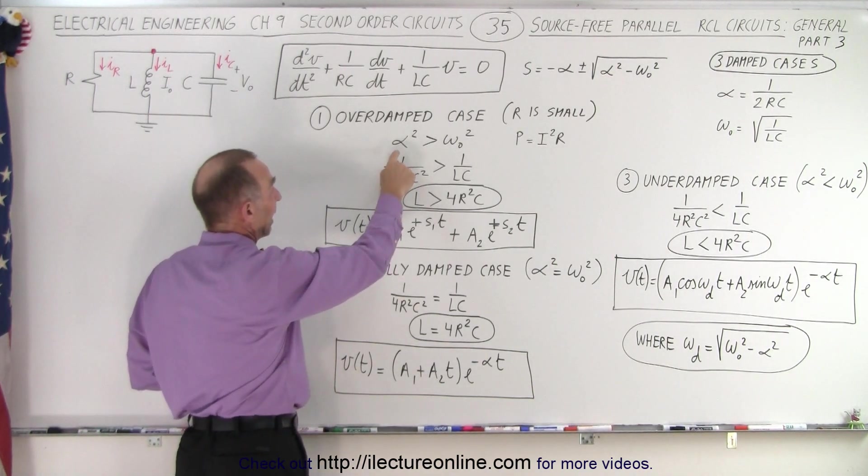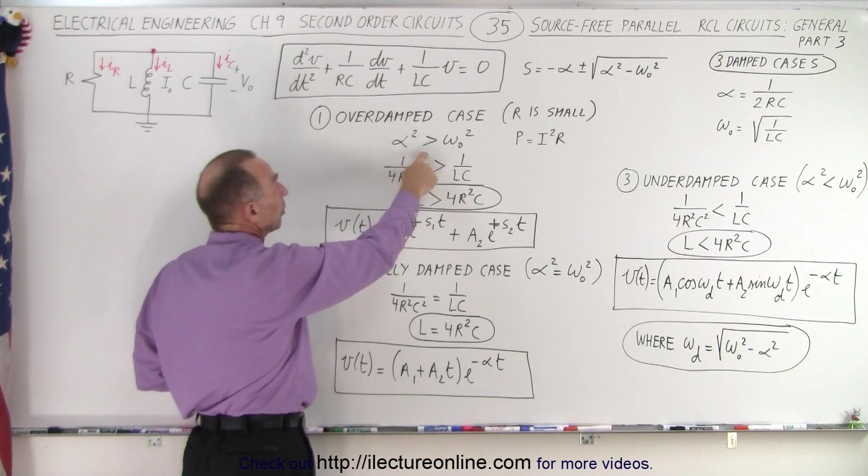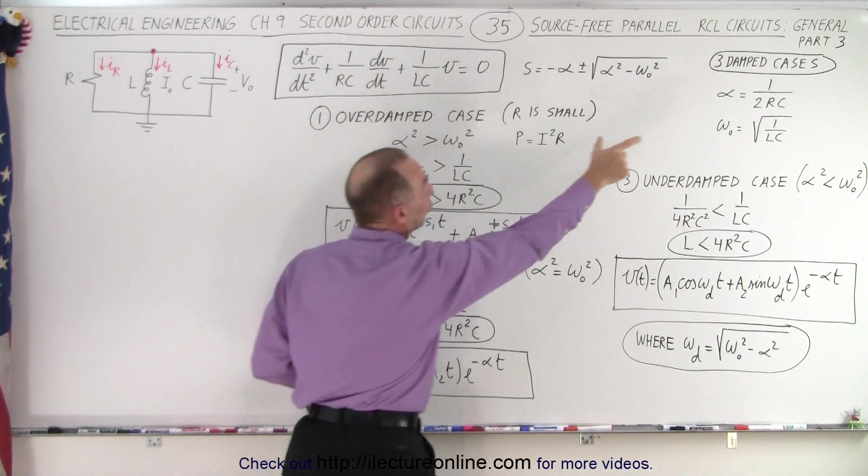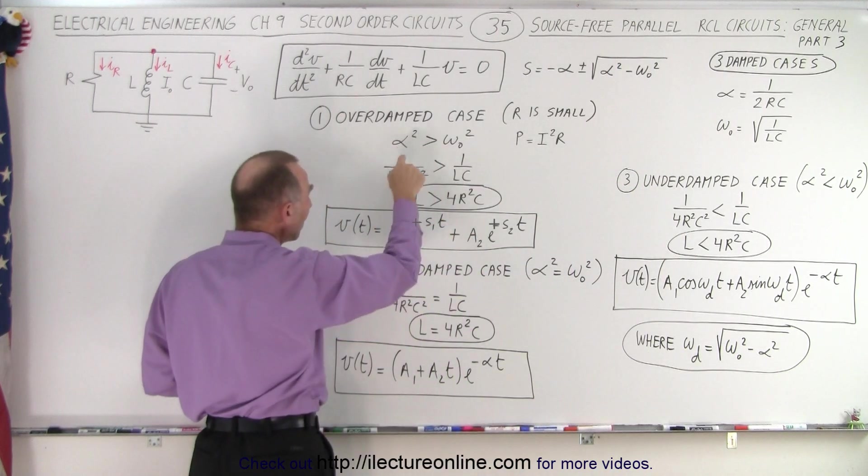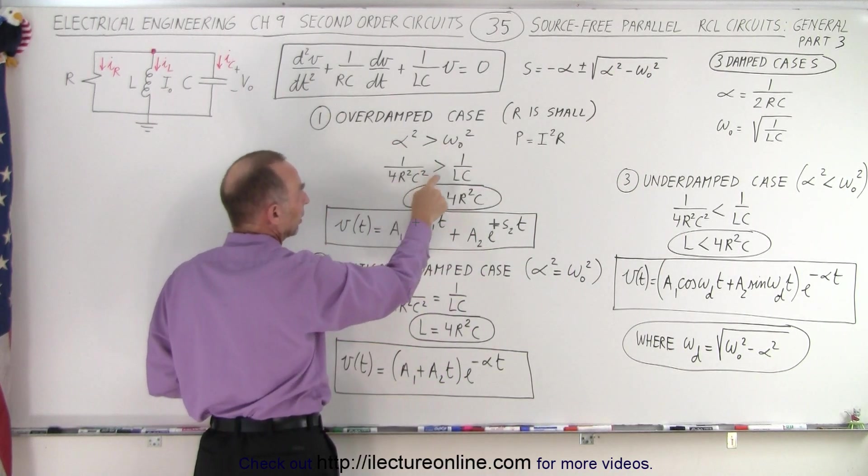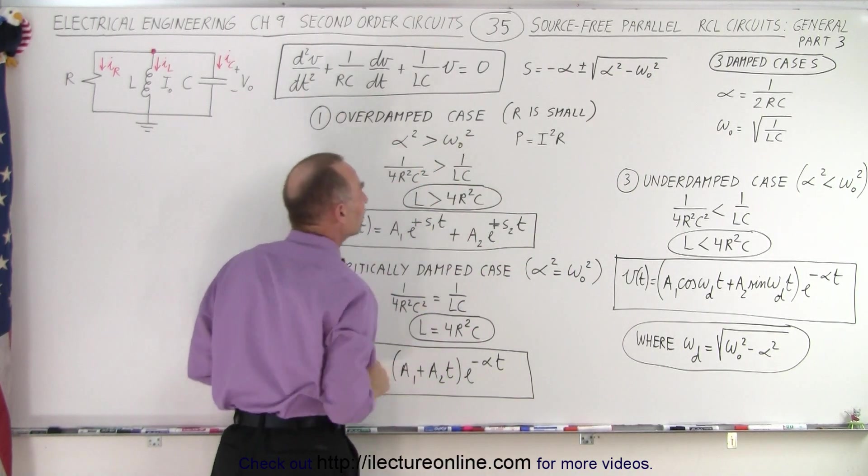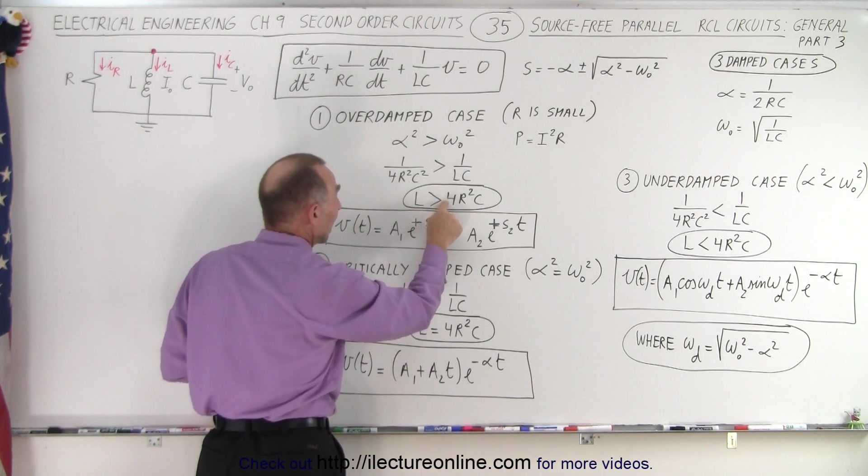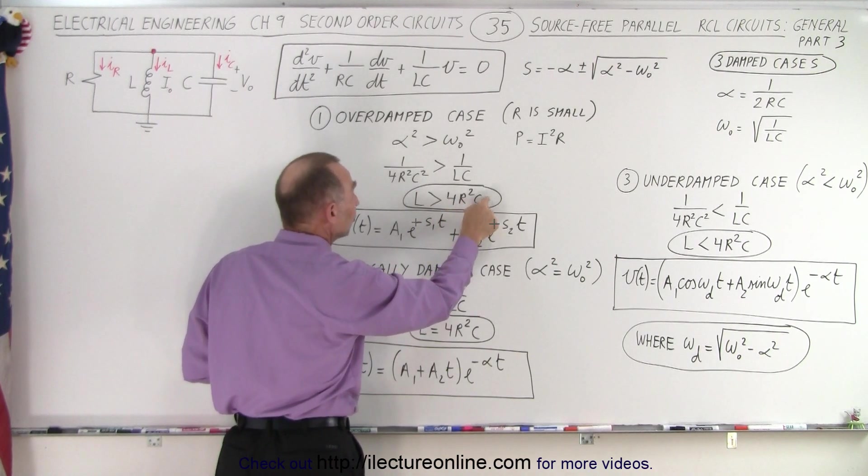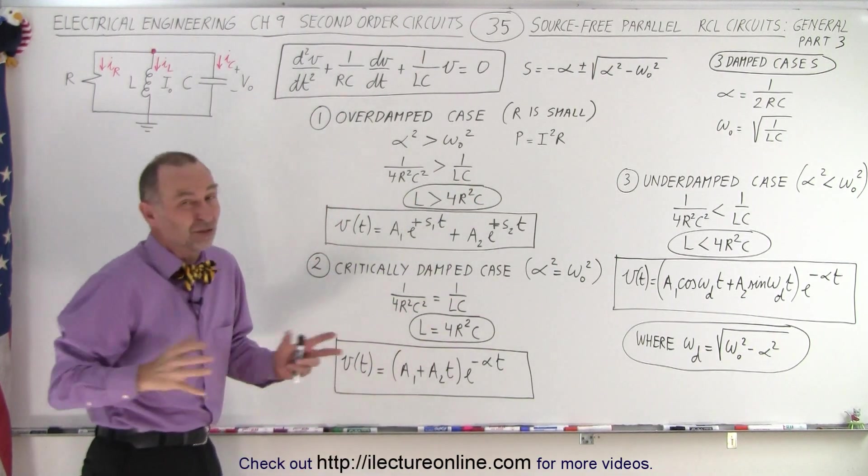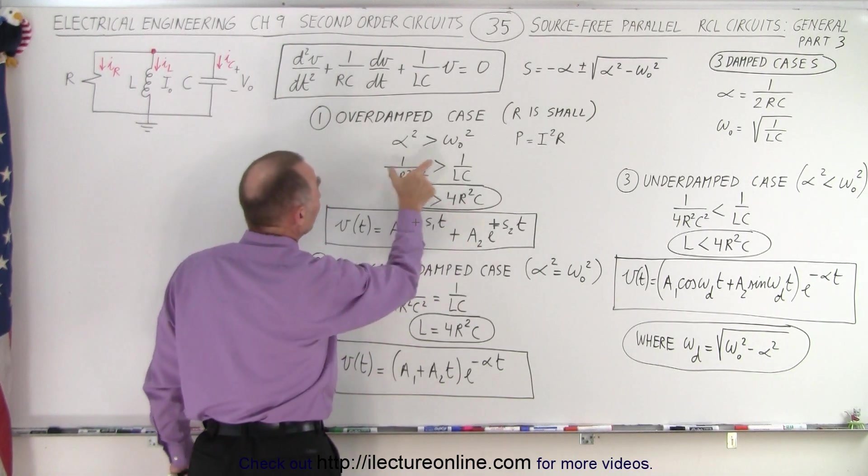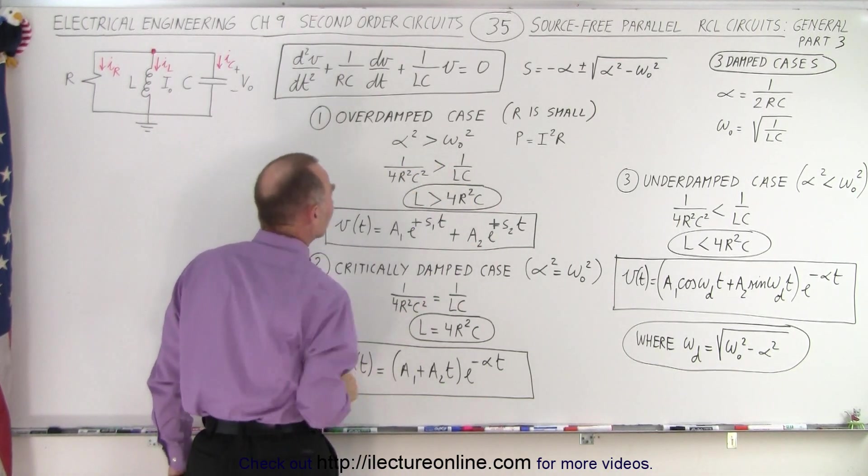So when we take a look at that, we realize that happens when alpha squared equals greater than omega sub-naught squared. So when we plug in what those are equal to, we have 1 over 4 R squared C squared must be greater than 1 over LC. In other words, when the inductance in the circuit is larger than 4 times the resistance squared times the capacitance, we have an overdamped case. So there's two ways in which you can calculate it. You can simply use this equation, or you can simply compare the alpha and the omega sub-naught.